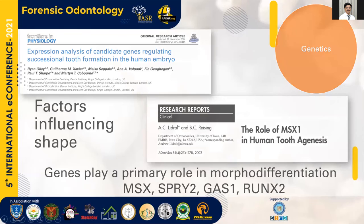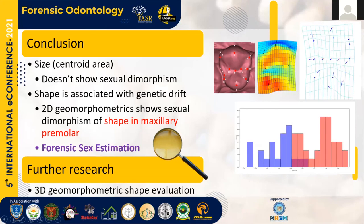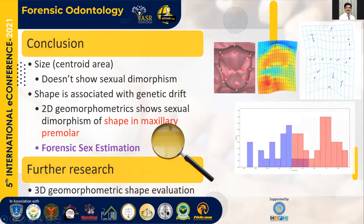To conclude, this two-dimensional geometric morphometric analysis was able to distinguish the shape of a premolar very consistently — 90.91 percent of cases — however the size did not show sexual dimorphism. For further research, I would like to include the third dimension of these landmarks, making it a 3D geometric morphometric shape evaluation, which I am sure would be more accurate than two-dimensional morphometrics. This was my presentation — thank you for hearing, and it's open for discussion.